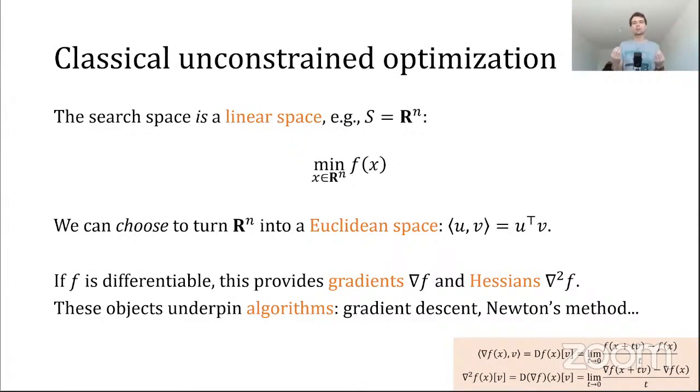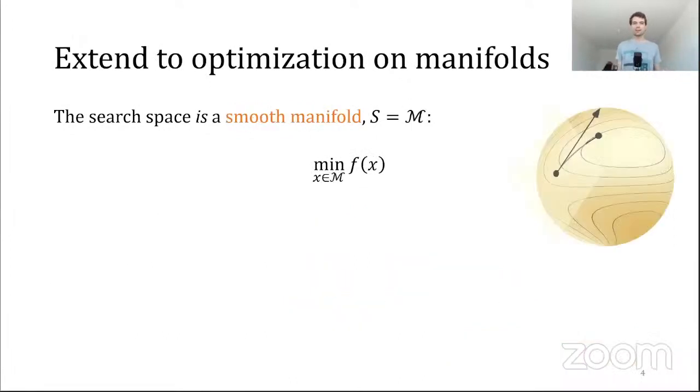Gradients allow you to design algorithms such as gradient descent, and the Hessian allows you to design Newton's method, along with all sorts of variations and refinements. So you start with just linearity, add some special structure, and that gives you additional tools and properties to design algorithms.